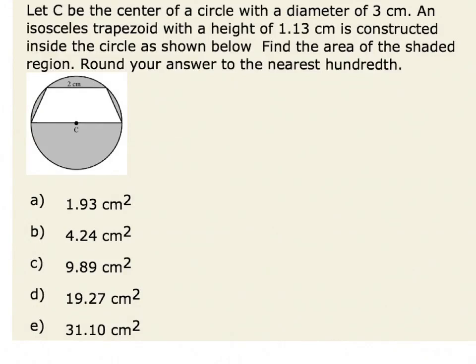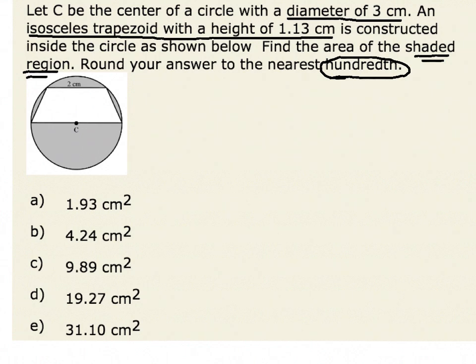In this problem, we are given that C is the center of a circle with a diameter of 3 centimeters. We also know that inside the circle, we constructed an isosceles trapezoid with a height of 1.13 centimeters. We want to know the area of the shaded region, rounded to the nearest hundredth. Since point C is the center, the base of the isosceles trapezoid is also the diameter of the circle, giving us a base equal to 3 centimeters.